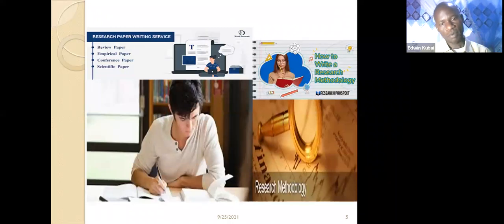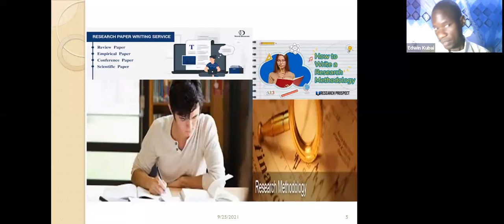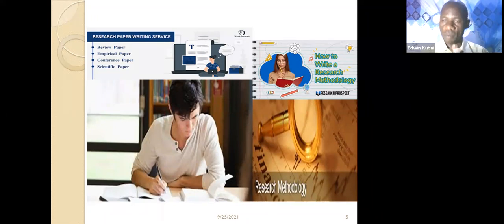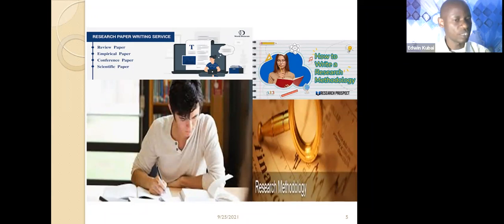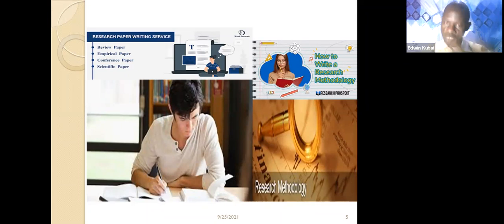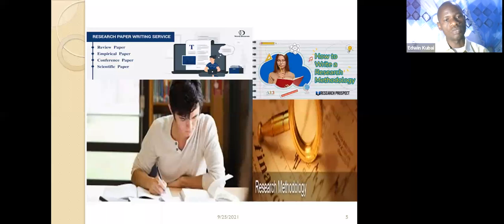When writing a paper, you need to determine which kind of paper you are writing — is it a review paper, an empirical paper, a conference paper, or a scientific paper? Once you identify the paper type, you can proceed accordingly. If it's a conference paper, you need to know the requirements of that conference and ensure your paper meets those requirements. If it's an empirical paper, it is a scientific paper that needs to be presented for academic purposes, meaning your data must be valid and properly presented.